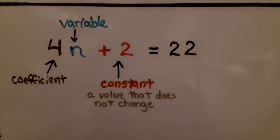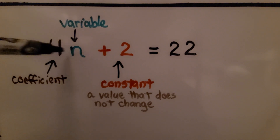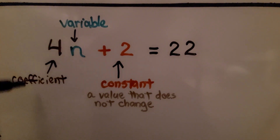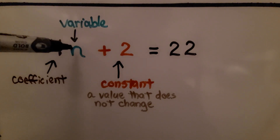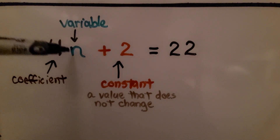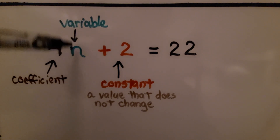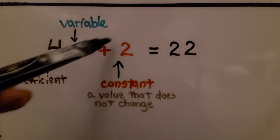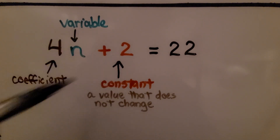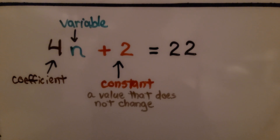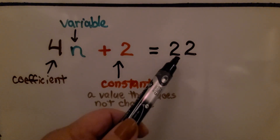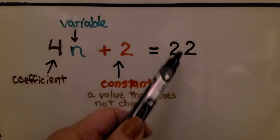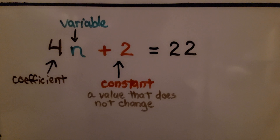Here are the parts of a two-step equation. We have a number just to the left of the variable — that's our coefficient. We have our letter of the alphabet that's taking the place of an unknown amount — that's our variable. And this number here is called the constant; it's a value that does not change. And this is the sum of 4n plus 2 on the right side of the equal sign.